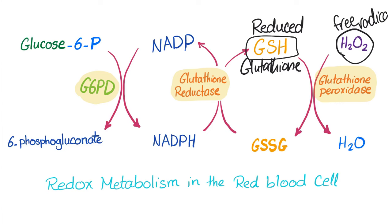Remember the Fenton reaction? When Fe is left free, the Fenton reaction produces free radicals and these free radicals will destroy the cell. Reduced glutathione is a protective mechanism against destruction of the red blood cell by free radicals. When glutathione is reduced, we can reduce the free radical into water — the hydroxyl free radical is converted into water. Harmful is converted into harmless, but only when glutathione is reduced.